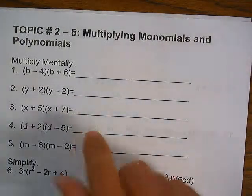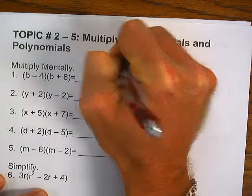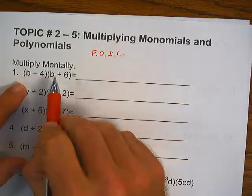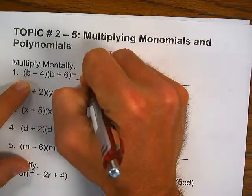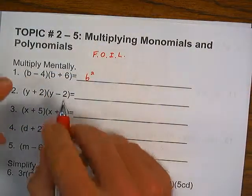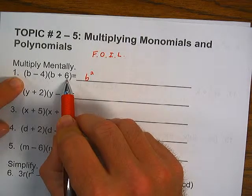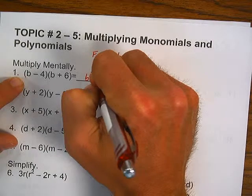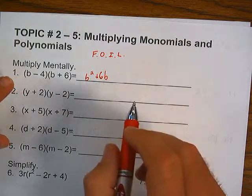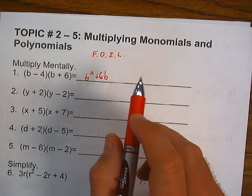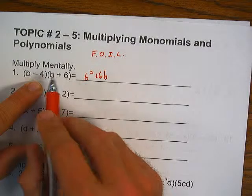F stands for First — multiply the first terms together: B times B, which is B squared. O stands for Outside: 6 times B, which is plus 6B. I stands for Inside: B and negative 4, which gives negative 4B.